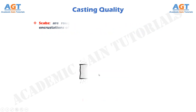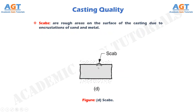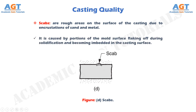Scabs are rough areas on the surface of the casting due to encrustations of sand and metal. It is caused by portions of the mold surface flaking off during solidification and becoming embedded in the casting surface.